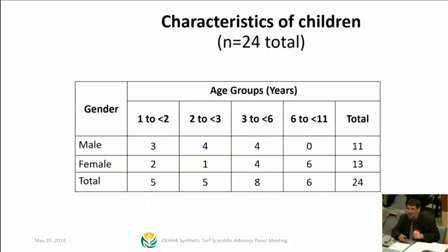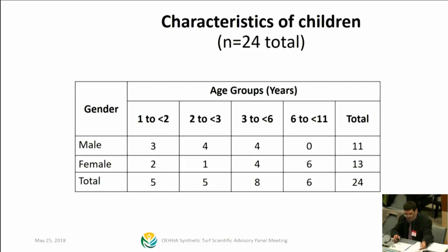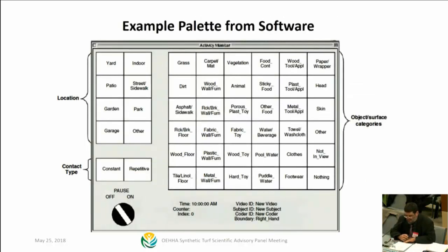Looking at the characteristics of those children: many of them are very young — one to two years old — and went up to almost age ten, but most of the children were one to six years old. About 24 kids and a fairly good cross-section. This is also an example of the software palette they developed to score the videotapes, which has since been updated and used in a number of different contexts.